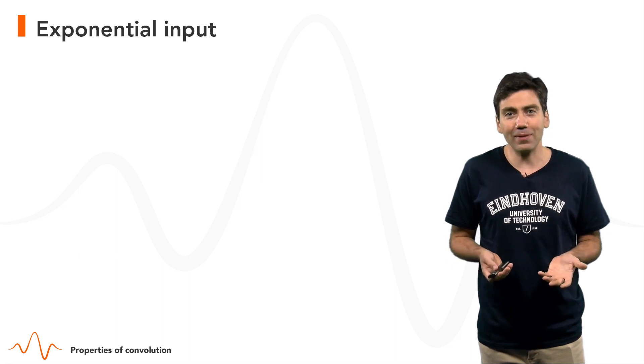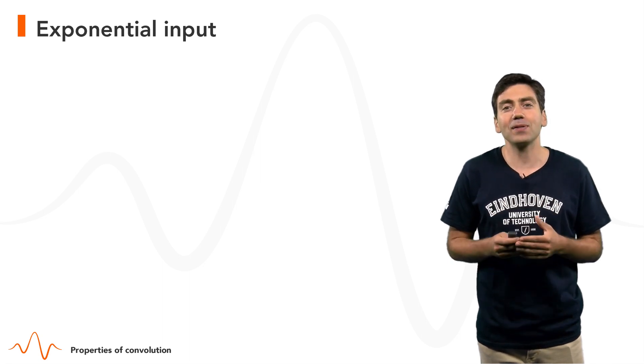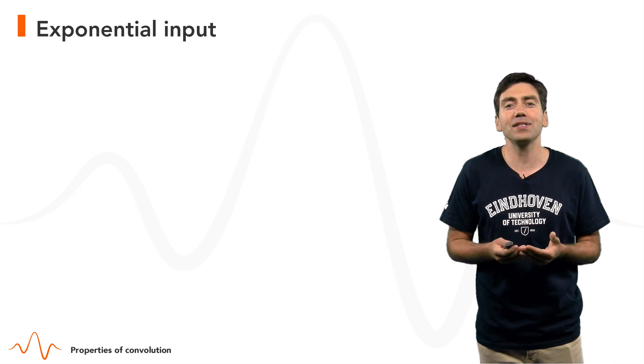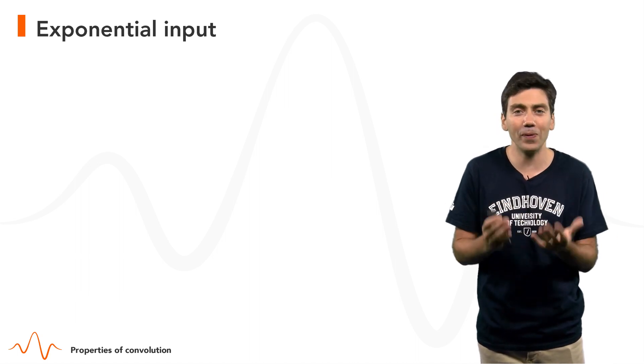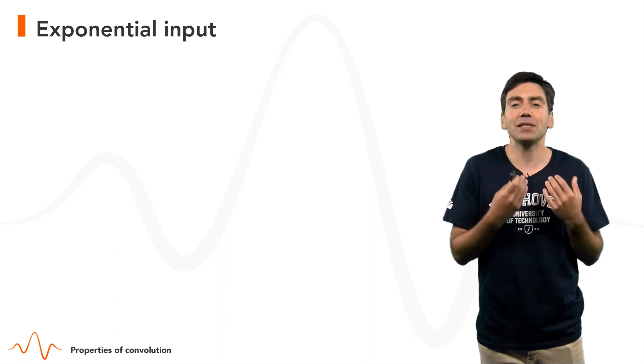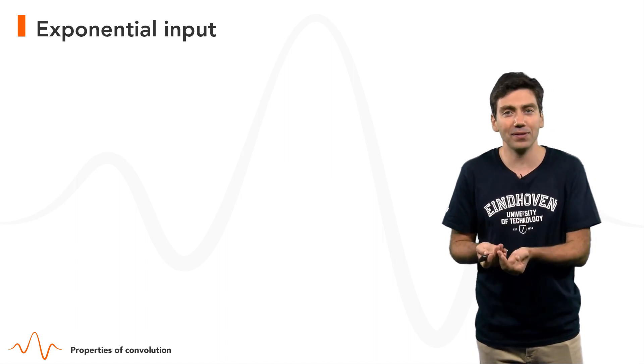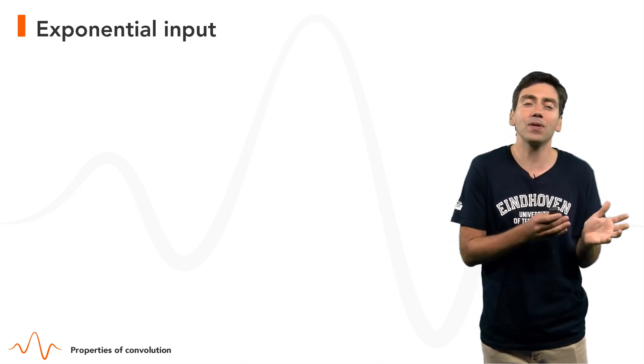As for discrete time signals, for continuous time signals the response of a linear system to an exponential input, might be a complex exponential or a real exponential, is an exponential output multiplied by a constant. And that constant might be either real or complex.